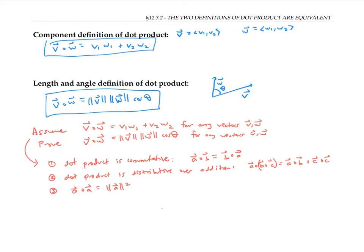Let me draw any two vectors, v and w. And I'm going to connect the terminal point of v to the terminal point of w with a new vector, I'll call it u. Notice that v plus u is equal to w, and so we can write u as w minus v.